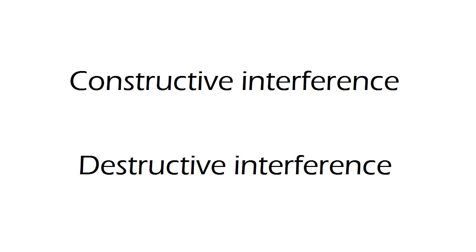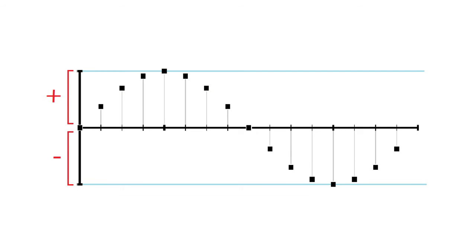The simplest cases are those of constructive and destructive interference. For this, we should keep in mind that the points over the central line have a positive sign, and the points under the central line have a negative sign.